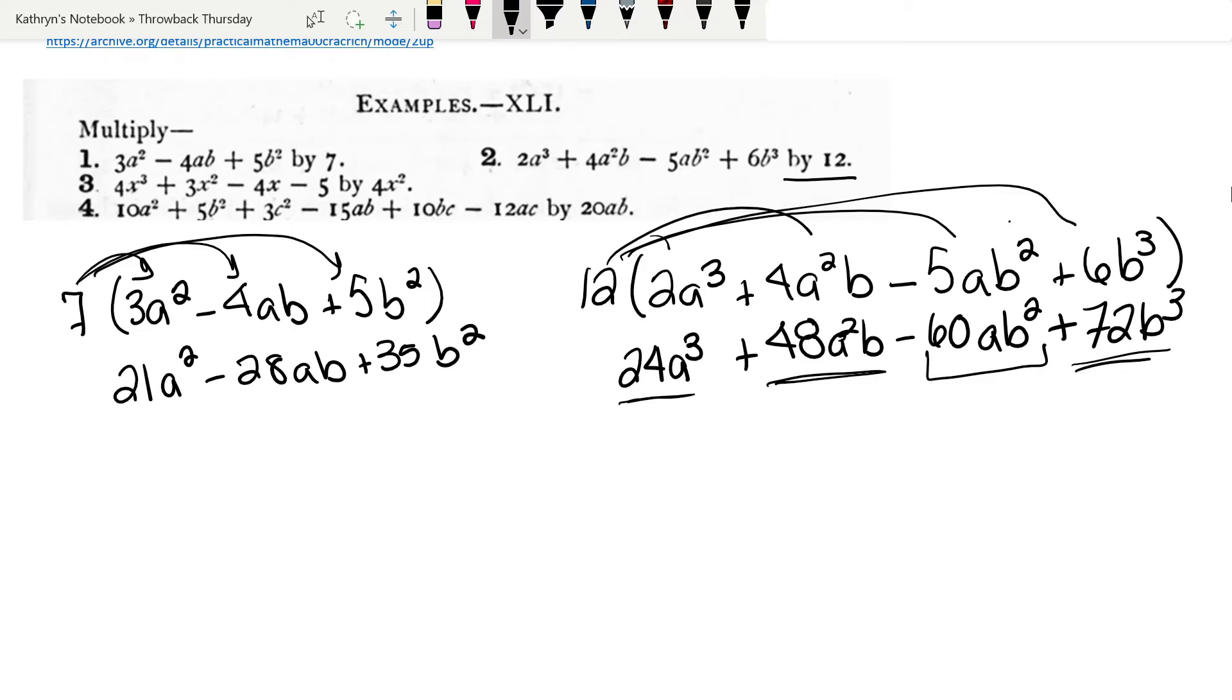Let's look at number three. We're going to multiply 4x² times 4x² plus 3x² minus 4x minus 5. Now I have one little mistake. This is actually 4x³. There we go. Once again, we're going to use our distributive property.